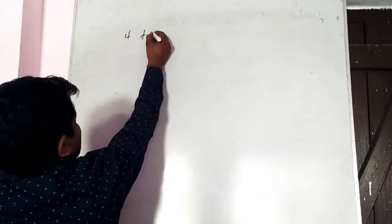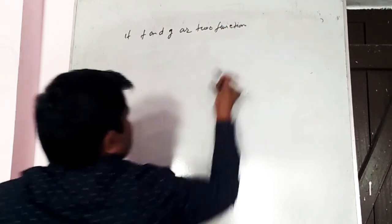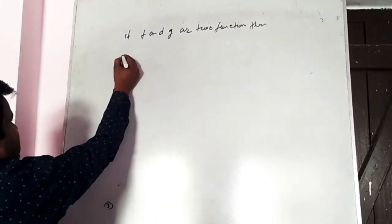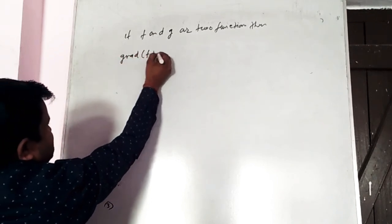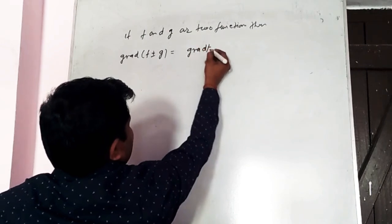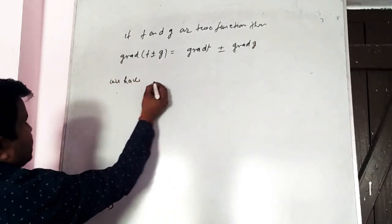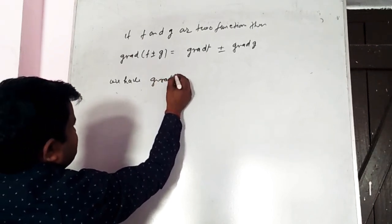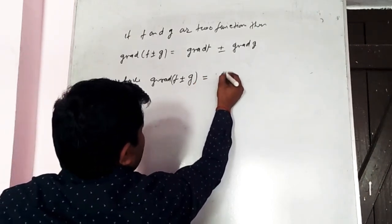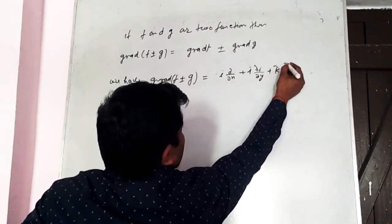If f and g are two functions, then grad(f ± g) is equal to grad f ± grad g. We have grad(f ± g) is equal to del = i ∂/∂x + j ∂/∂y + k ∂/∂z, applied to (f ± g).